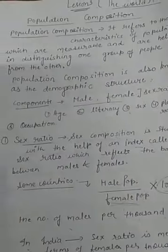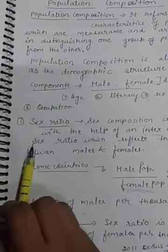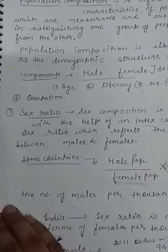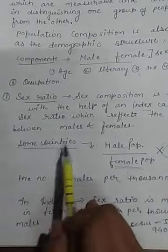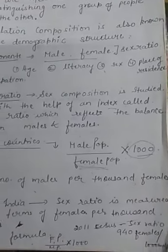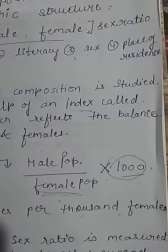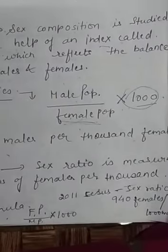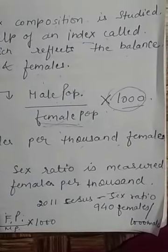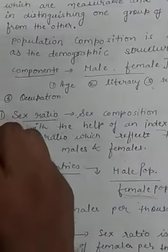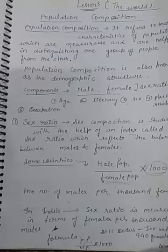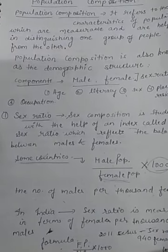So, population composition is based on some components, and we discussed sex ratio as a key one. Sex ratio reflects the balance between males and females. In most countries, the formula is male population upon female population into 1000; in India it is female population upon male population into 1000, giving 940 females per 1000 males in 2011. I hope you will read and prepare this topic. In our next lecture we will continue with the next topic. Thank you so much.